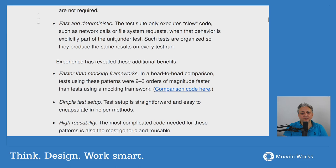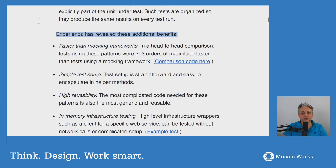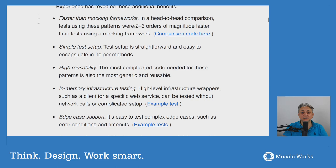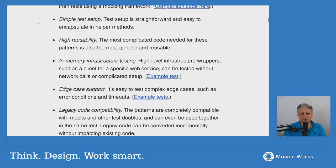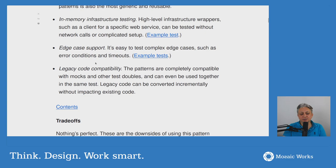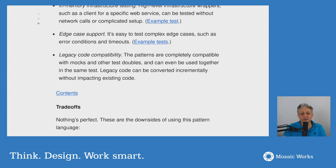The approach is also fast and deterministic — the test suite only executes slow code when that behavior is explicitly part of the unit under test. Apparently it's also faster than mocking frameworks, which makes sense because mocking frameworks likely use reflection, which tends to be slow. Other benefits include simple test setup, higher usability, in-memory infrastructure testing, and legacy code compatibility — you can incrementally add this type of testing.